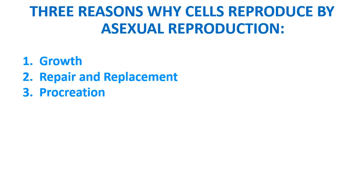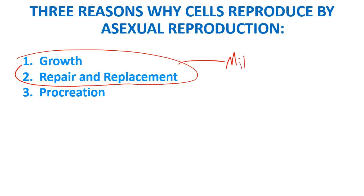Let's quickly go back and remember why cells actually reproduce asexually — in other words, why do they divide? We have growth, repair and replacement, and procreation. When we're talking about mitosis, we're really talking about growth and repair. In multicellular organisms we need to grow, making more cells, and if we have any damage to tissue or need to replace dead cells, we divide using mitosis. Procreation is for prokaryotes doing binary fission.